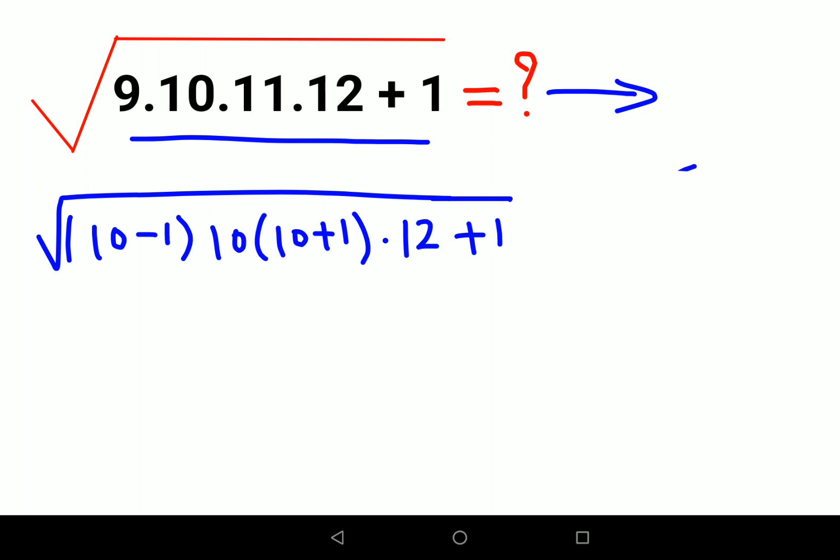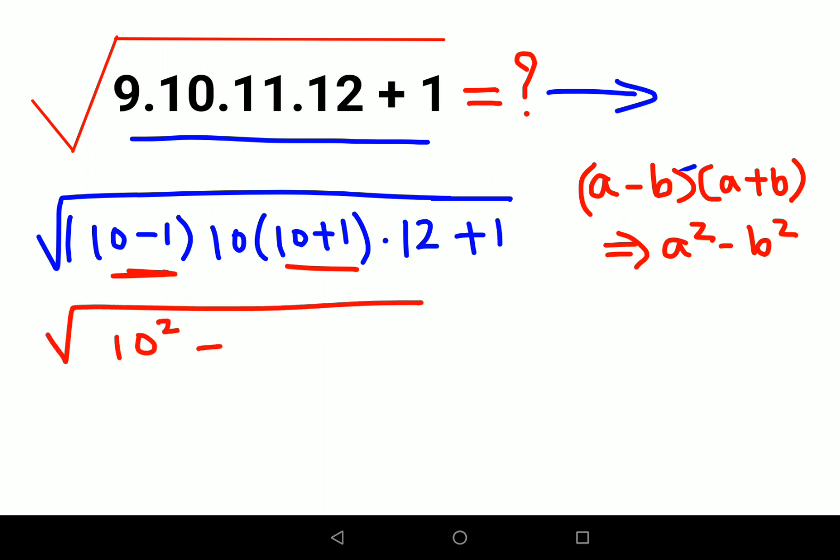So what happens in this case is they start clubbing this: 10 minus 1 into 10 plus 1. It looks like a minus b into a plus b, which is basically a square minus b square. So it becomes 10 square minus 1 squared, and you club 10 and 10 into 12, that gets you 120 plus 1.